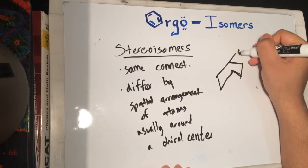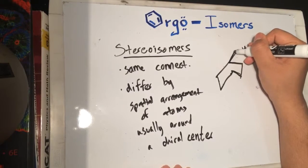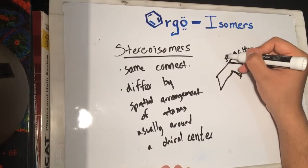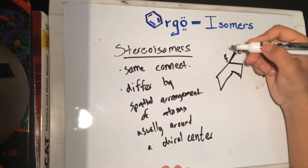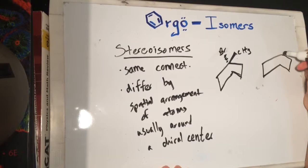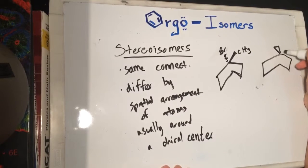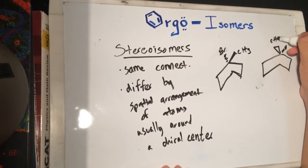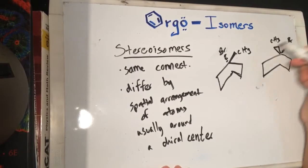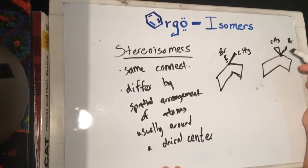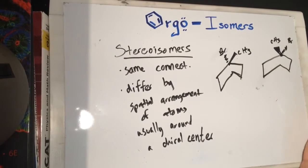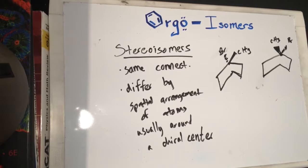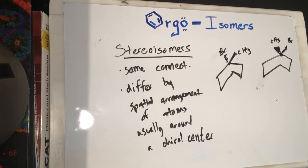Over here we have a methyl group on a wedge, and then we have a bromine. The same molecule over here has the methyl group and a bromine — this is the chiral center on both of them. You can see how the atoms are arranged differently — that's what stereoisomers is.